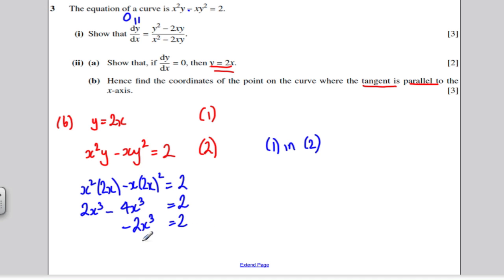Divide both sides by minus 2. So, x cubed must be minus 1. And if x cubed is minus 1, then x must be minus 1. And substituting back into equation y, it tells us that y is equal to minus 2. So, the coordinates we're looking for are minus 1, minus 2.